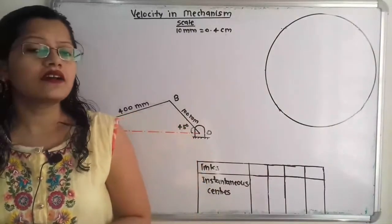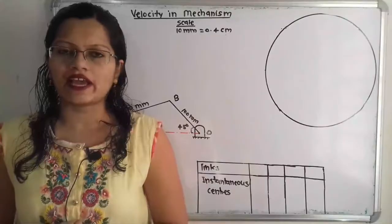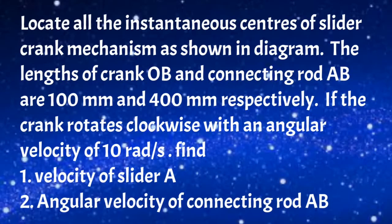Hello friends, this is Priyanka. Today we are going to solve a problem on instantaneous center for slider crank mechanism. The given problem asks us to locate all the instantaneous centers of the slider crank mechanism as shown in the diagram. The length of crank OB and connecting rod AB are 100 millimeter and 400 millimeter respectively. If the crank rotates clockwise with an angular velocity of 10 rad per second, find first the velocity of slider, and second the angular velocity of connecting rod AB.